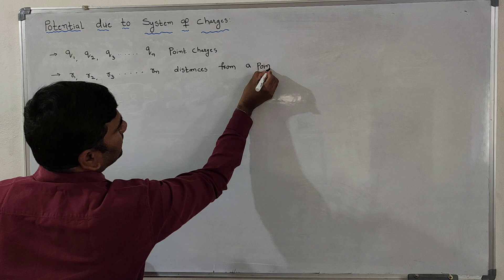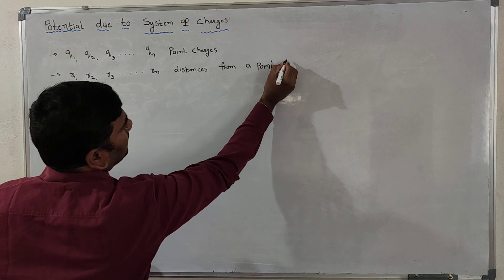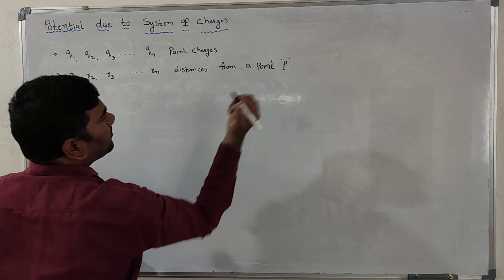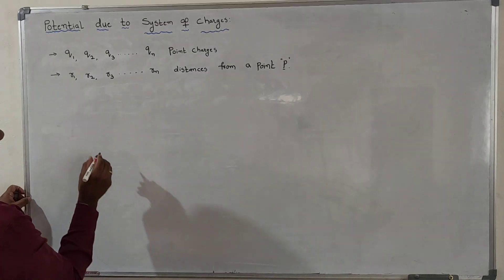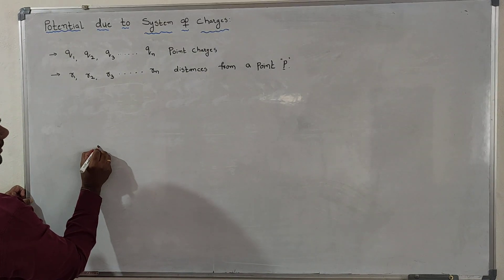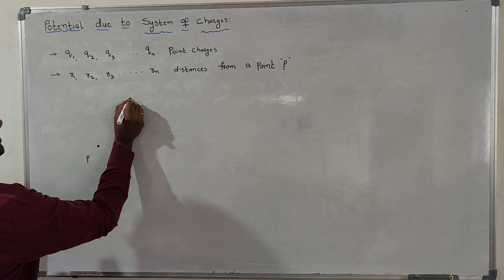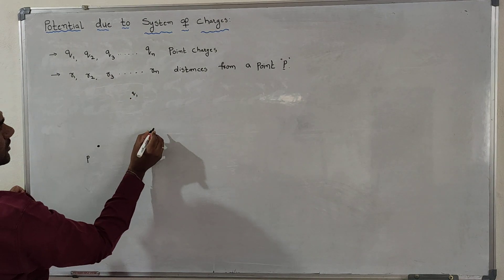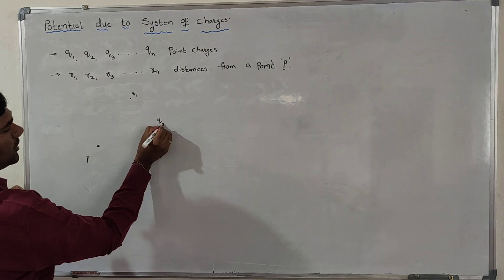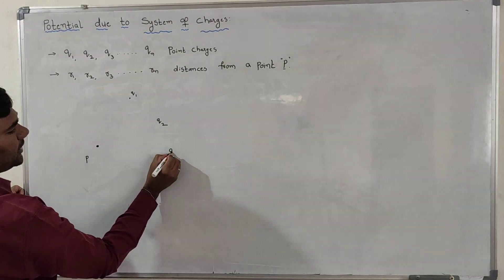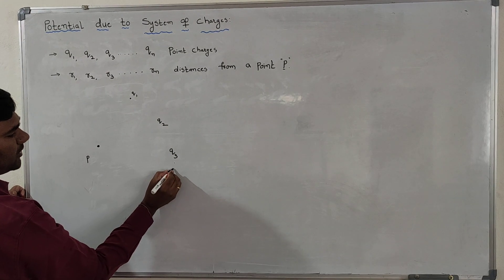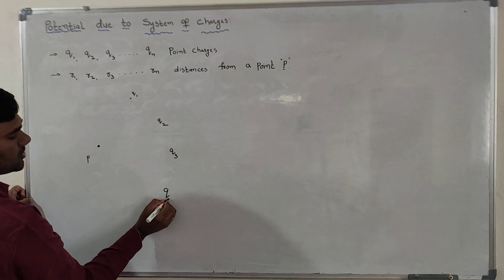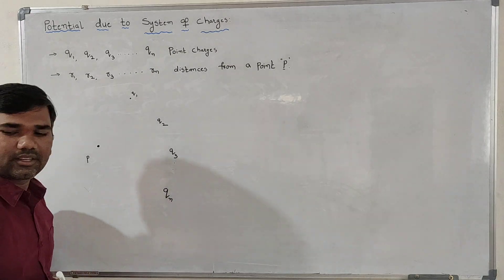Now let us draw the diagram. Consider a point P here, this is the point P. Now Q1 is the charge here, Q2 is the charge here, Q3 is the charge here. Like that we have n charges, Qn is the charge here.